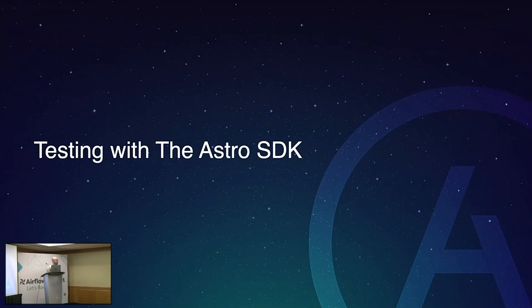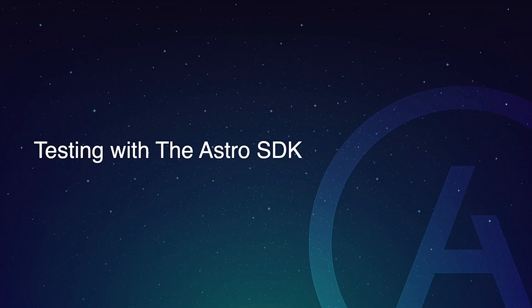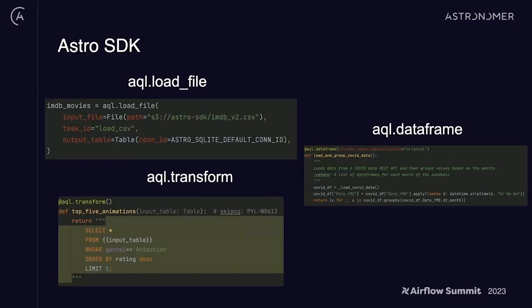Now let's talk about testing with the Astro SDK, because everything so far has used just local code. We want to talk about how to use real data from real data systems, which involves loading data and transforming data. With the Astro SDK, there are three main functions: aql.loadfile, aql.dataframe, and aql.transform.